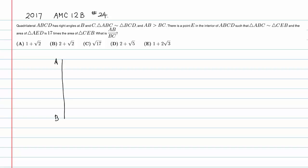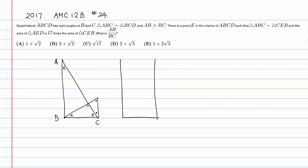Let me draw this. Angle B is a right angle, angle C is a right angle, but AB is longer than BC. We can still make both triangles similar. If this angle is X, both triangles share angle X.